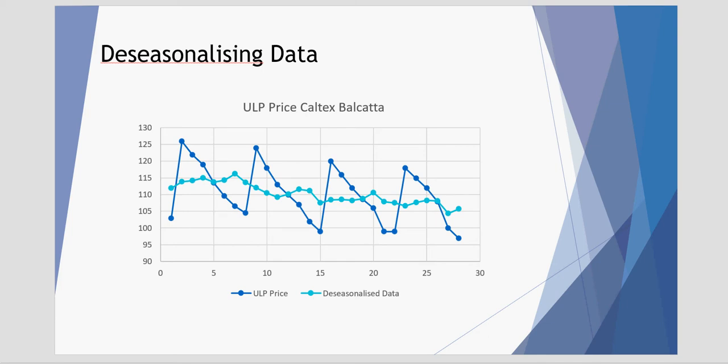Welcome to this tutorial video on deseasonalizing data. Deseasonalizing data is a technique that allows us to take away seasonal variations and fluctuations from a set of data in order to analyze trends and make predictions.